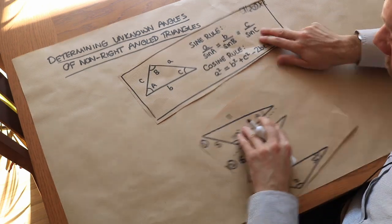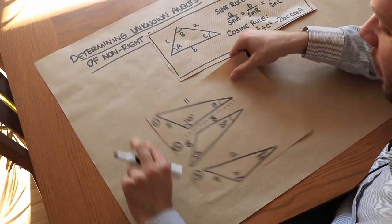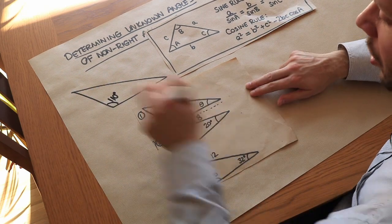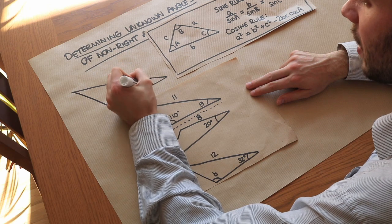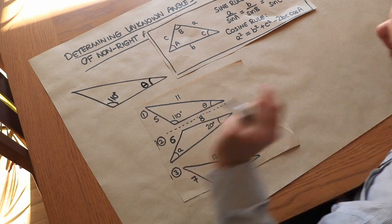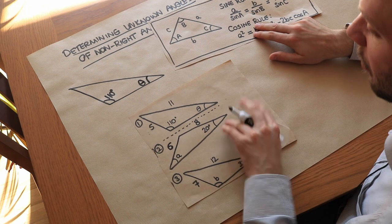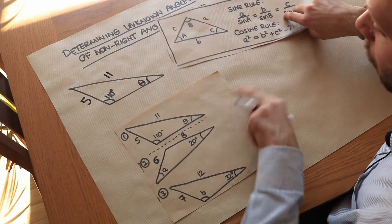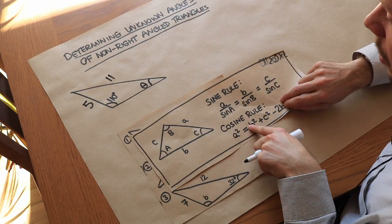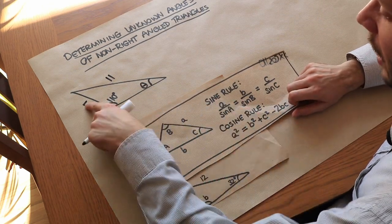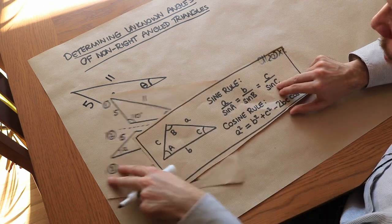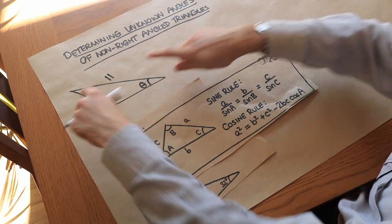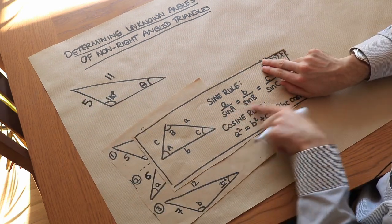Now let's dive straight in with some example problems. We've got this triangle here with 110 degrees, an unknown angle theta — remember theta is just a Greek letter, basically any variable name often used for angles — and sides of 5 and 11. We don't have all three sides, so we can't use the cosine rule, but we do have a side-angle pair and another side-angle pair, so we're going to use the sine rule.